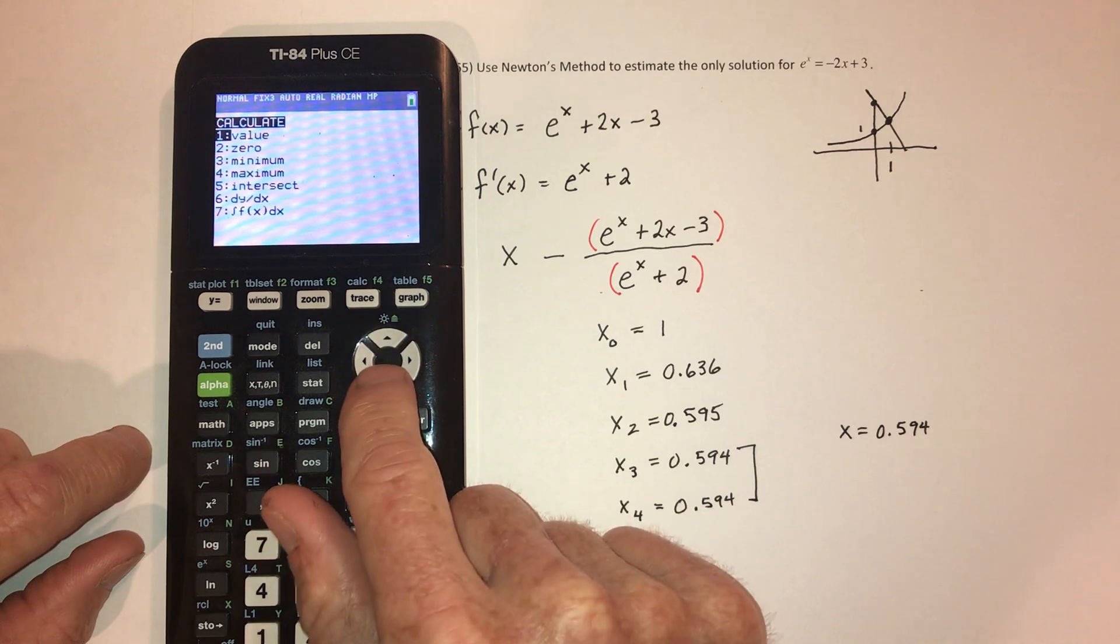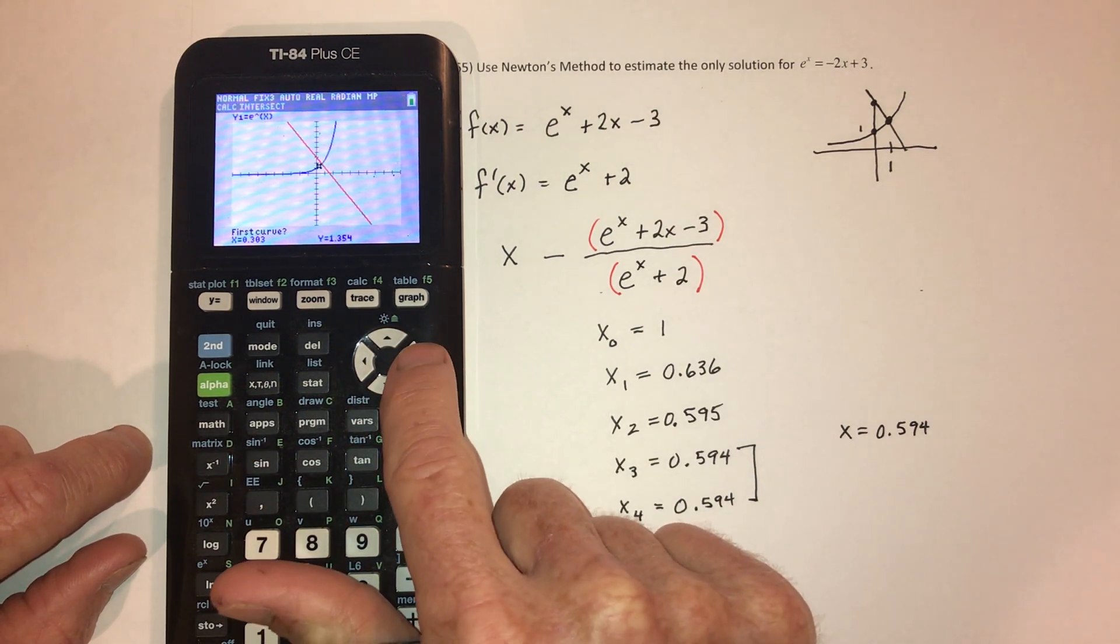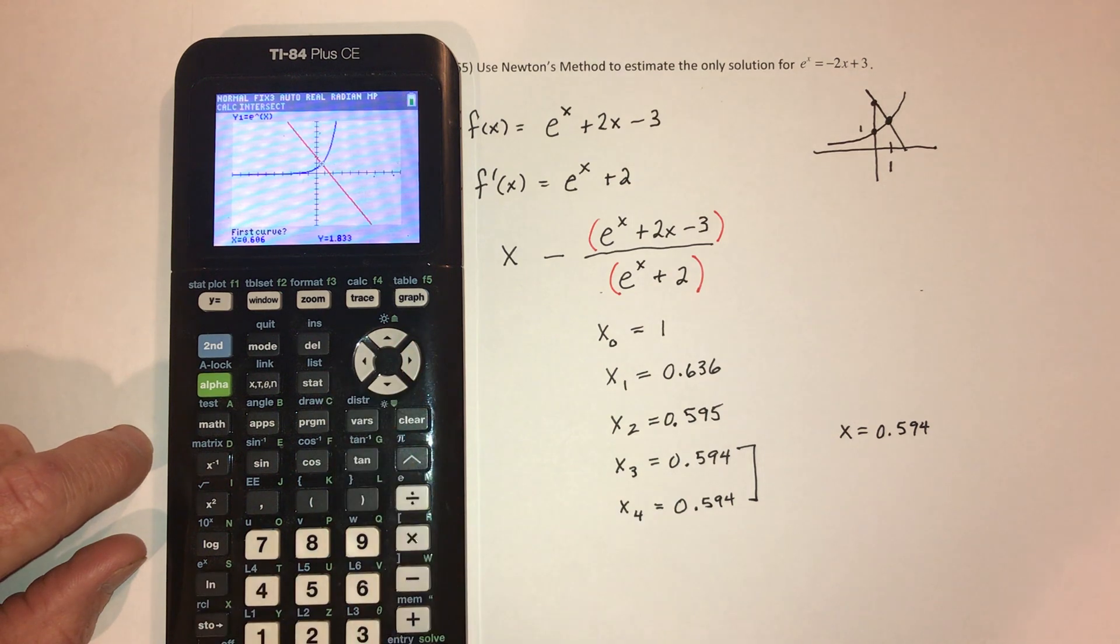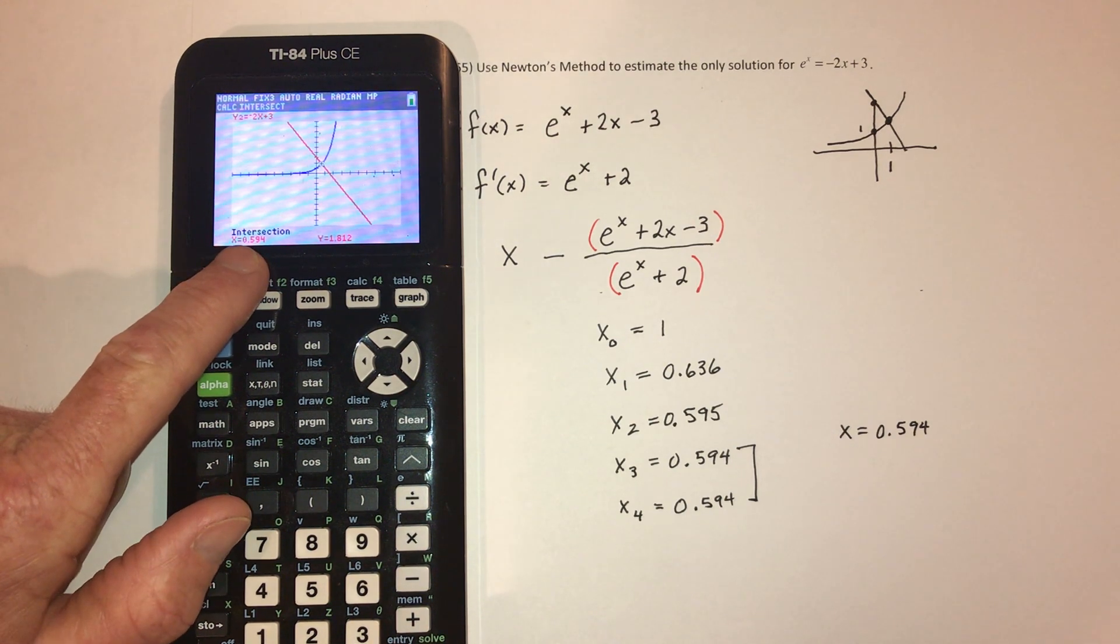And then second, calculate. Find out where they intersect. And then put the cursor close to where they intersect and hit enter three times. One, two, three. And it says that the answer is 0.594.